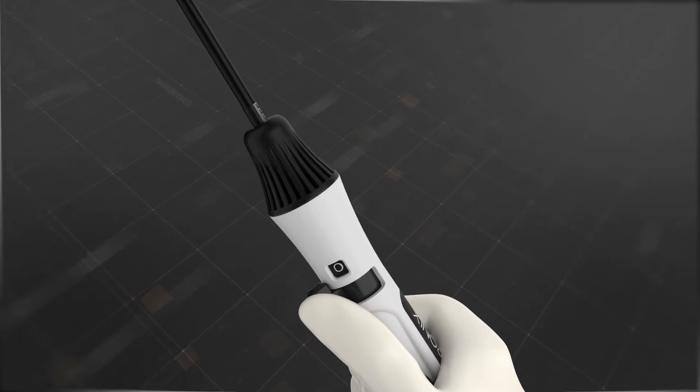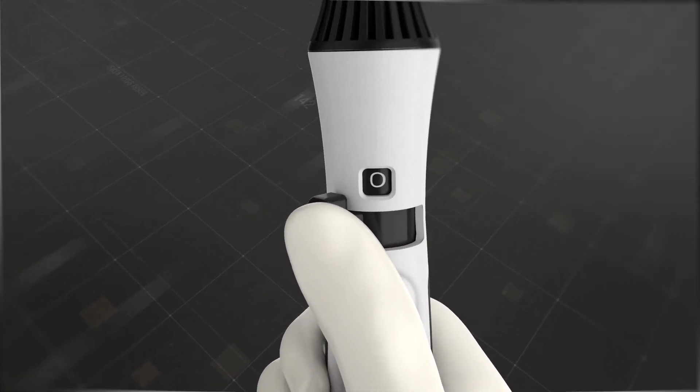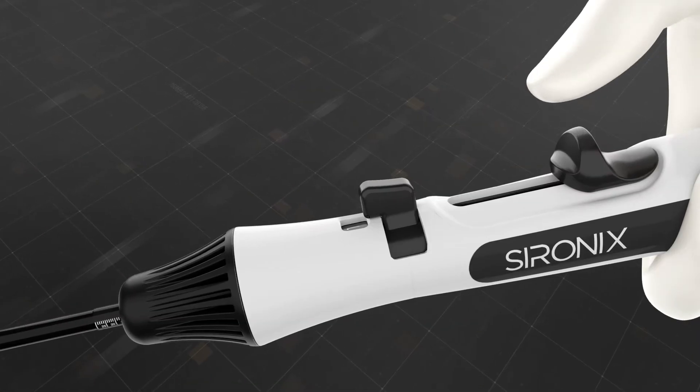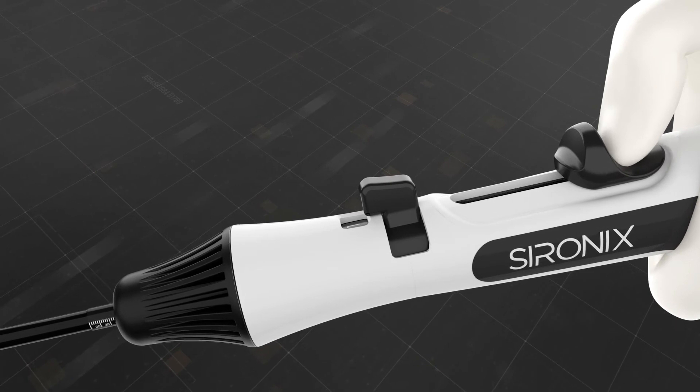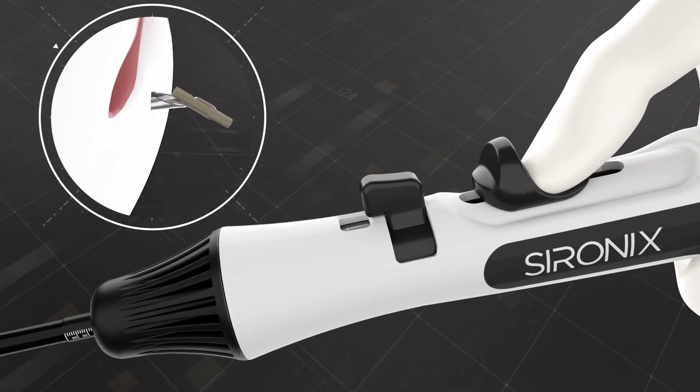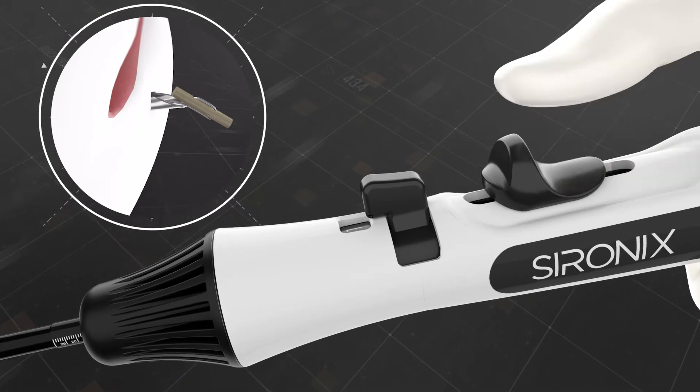Now, prepare to deploy the first implant by turning the safety knob from safe position zero to active position one. Advance the deployment knob using the thumb until an audible click to deploy the first implant. Then release and allow it to spring back to its half position.